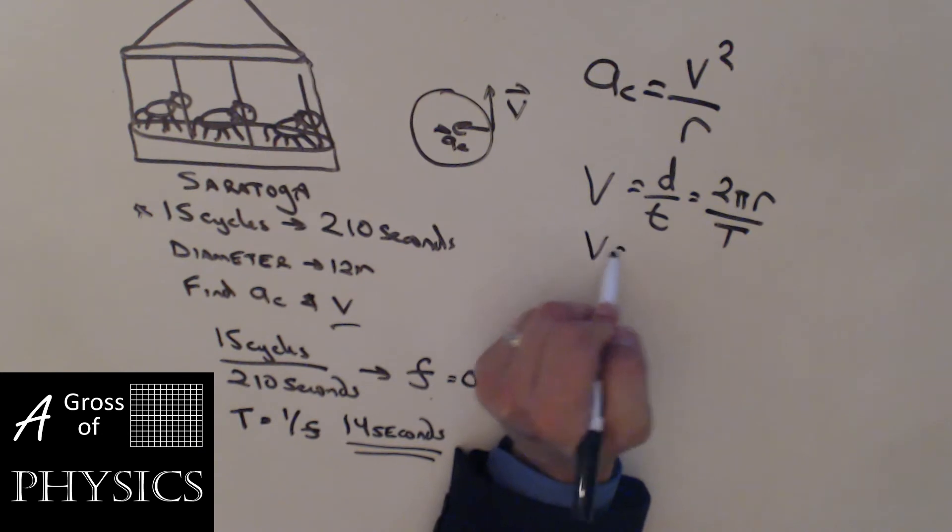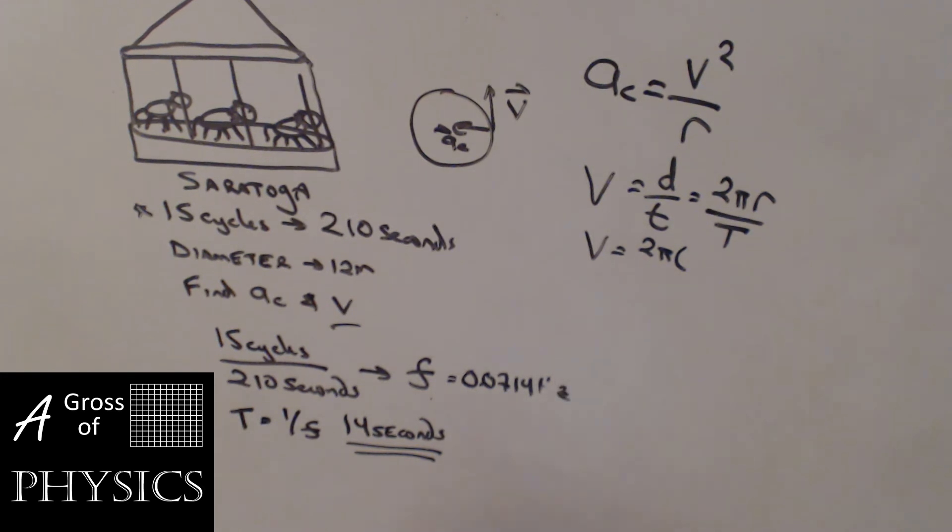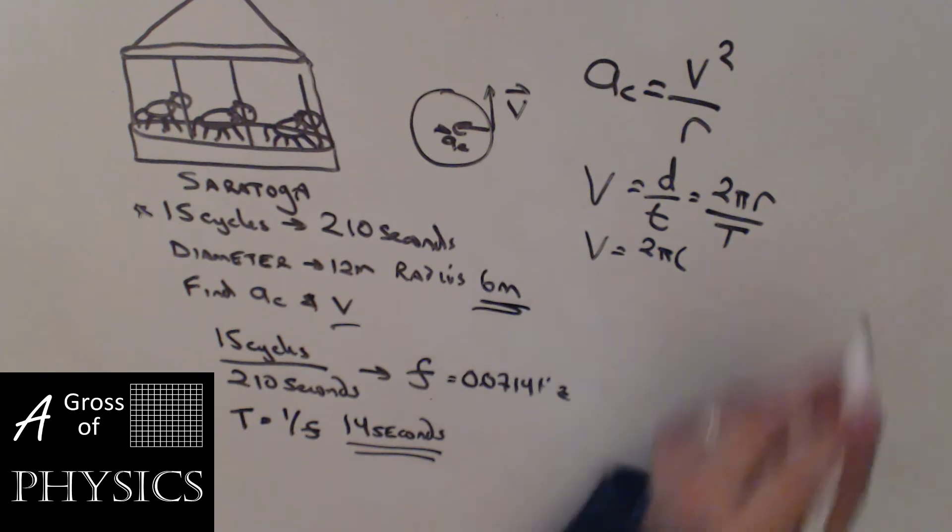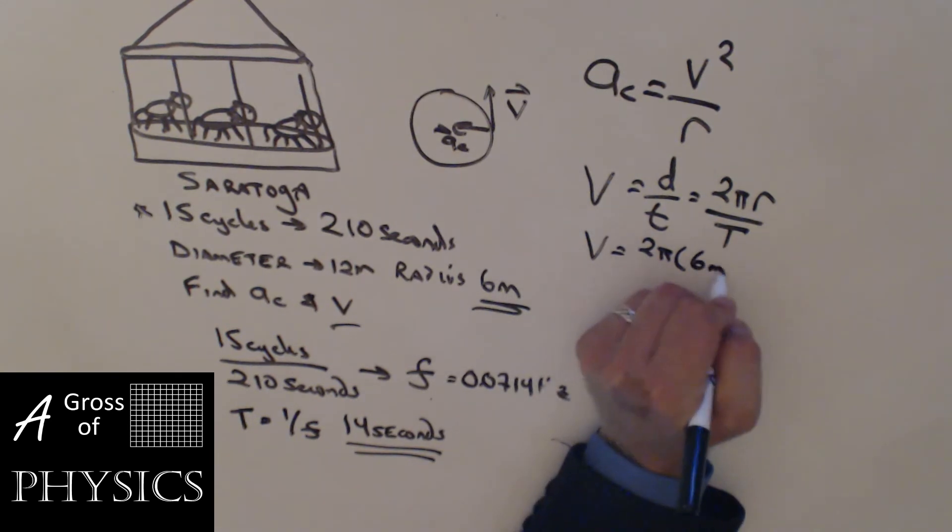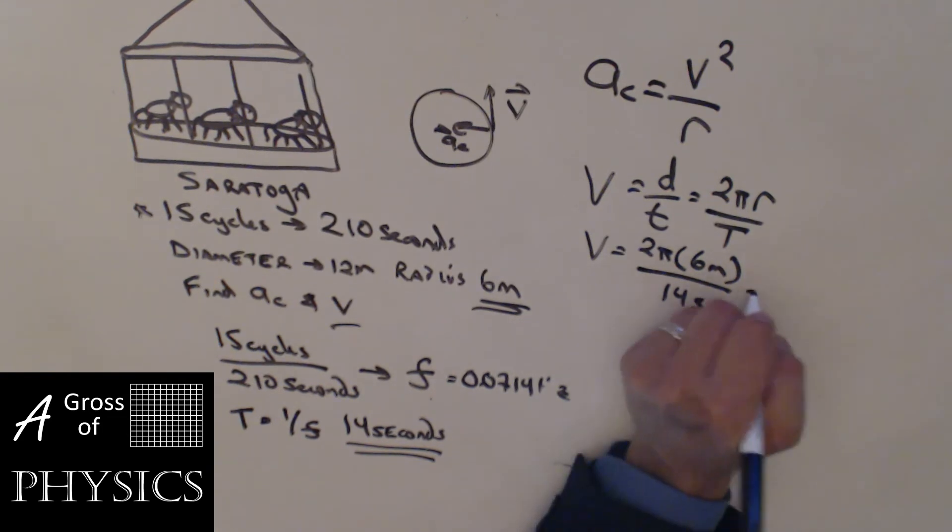If I want to find the speed of the riders, I'm going to put 2 pi times r. We know diameter. Well that's easy to fix. The radius is 6 meters, which is half of the diameter. That's a pitfall that you may have fallen into. And divide that by 14 seconds. 2 times pi times 6, 37.68, divided by 14. The riders are traveling at 2.7 meters per second.